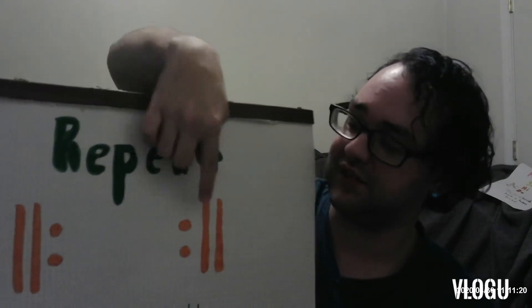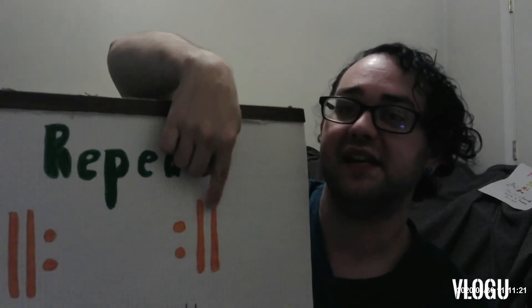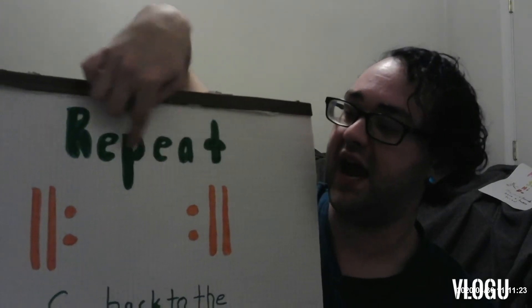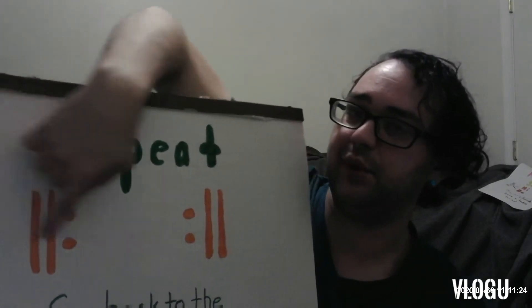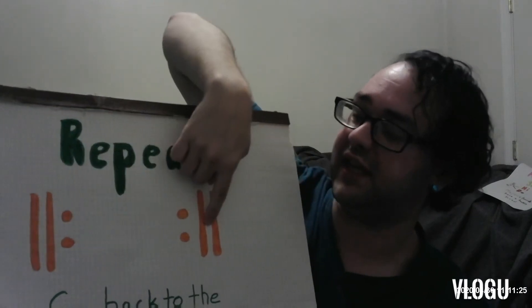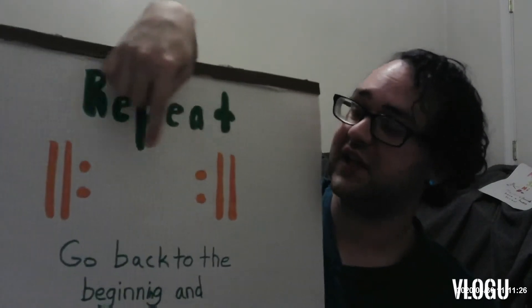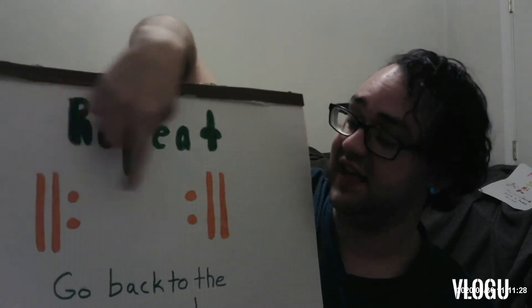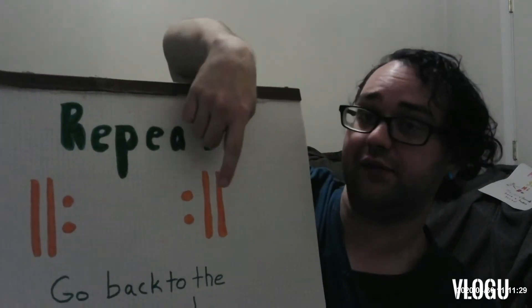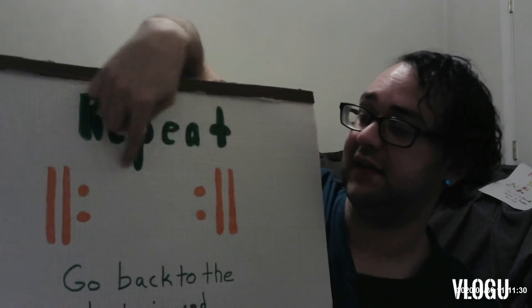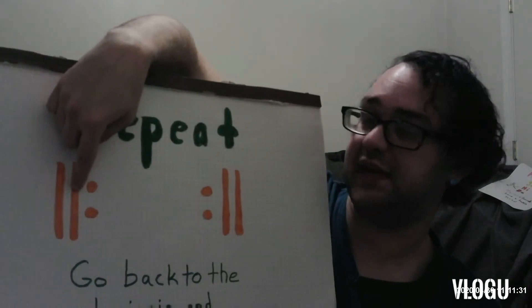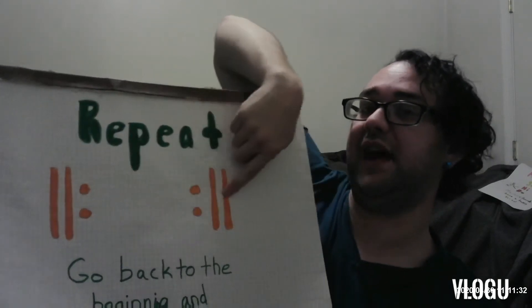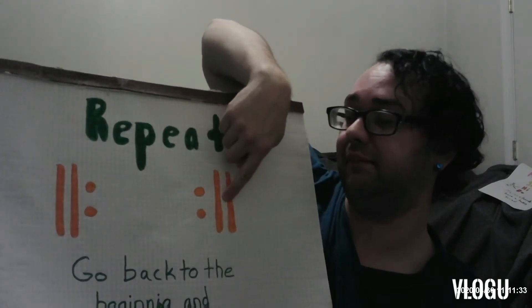This is called a repeat sign. So when you see a repeat sign like this, it's telling you to go back to the beginning and play the whole song again. If the song has a repeat sign that looks like this, it means you go from this repeat sign to this repeat sign and sing that part again.